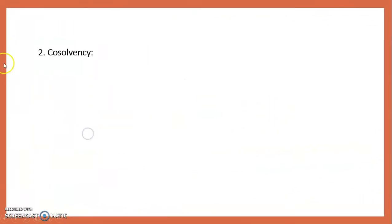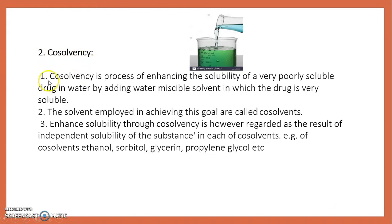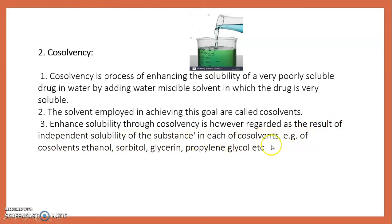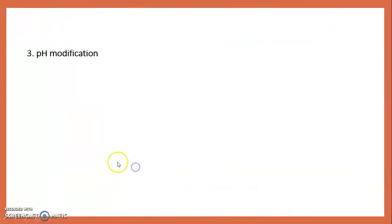Co-solvency is the process of enhancing the solubility of a poorly soluble drug in water by adding a water-miscible solvent in which the drug is very soluble. The solvents employed to achieve this goal are called co-solvents. The enhanced solubility through co-solvency is regarded as the result of independent solubility of the substance in each co-solvent. Examples of co-solvents include ethanol, sorbitol, glycerin, and propylene glycol.